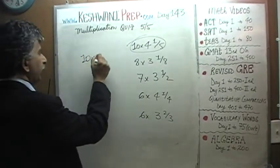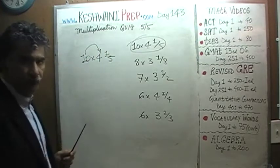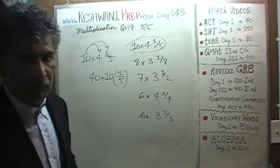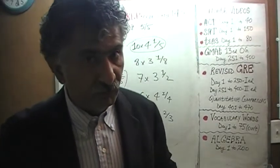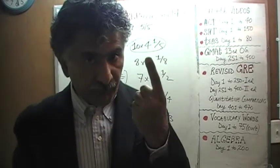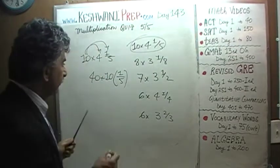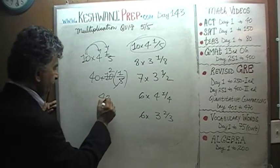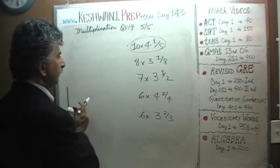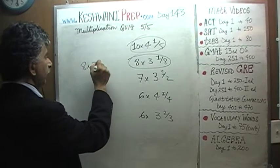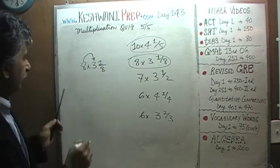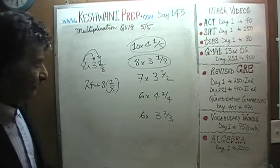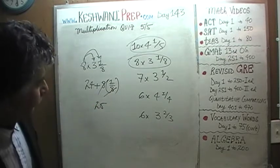Ten times four and one fifth: ten times four is forty, and ten fifths — five fifths is one, so ten fifths is two. The answer is forty-two. Eight times three and one eighth: eight times three is twenty-four, plus eight one-eighths. Eight one-eighths is one, so the answer is twenty-five.